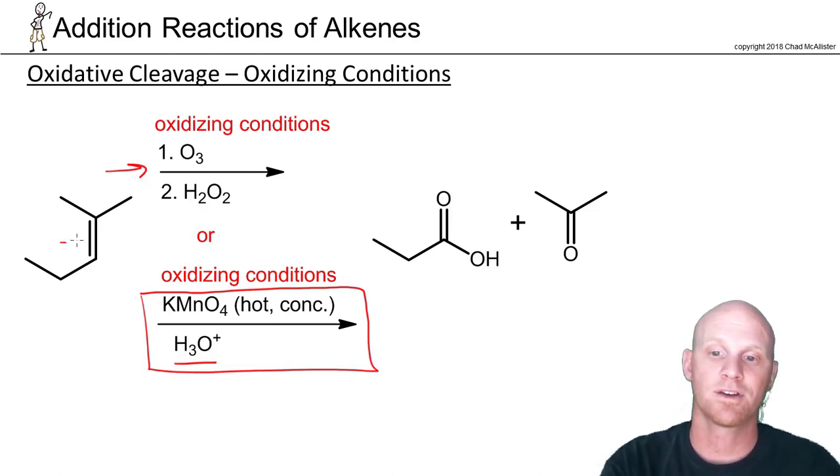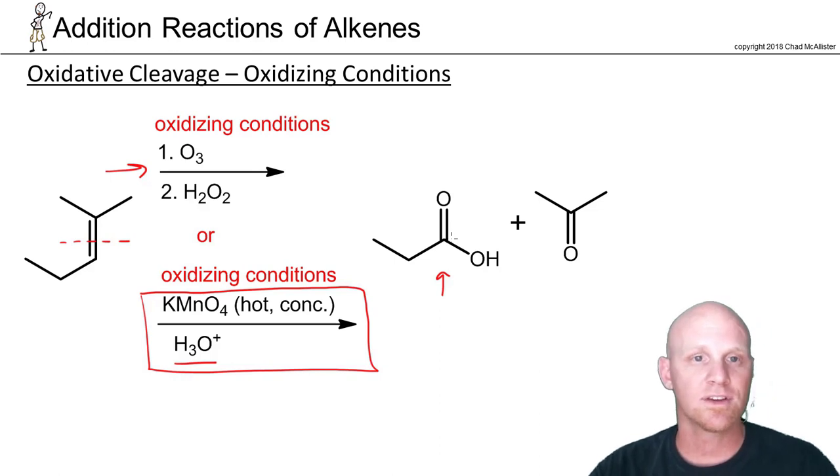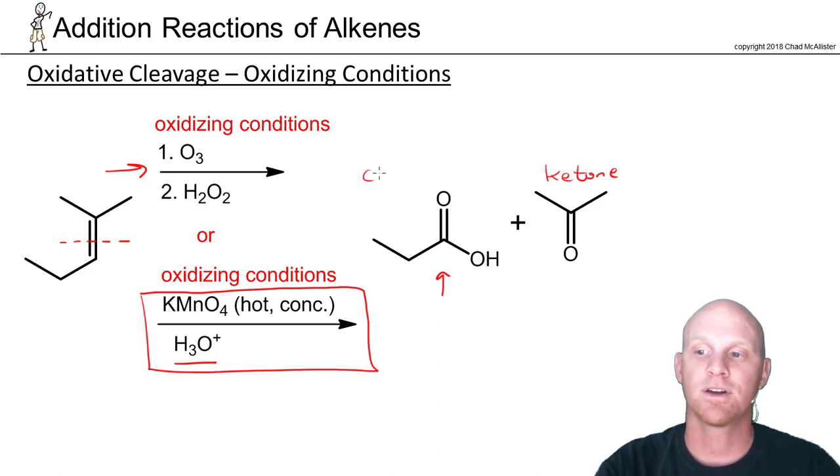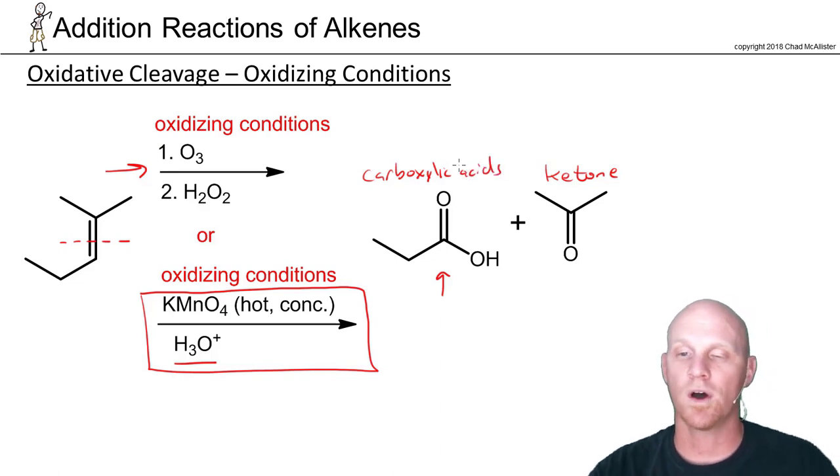And so in this case, it does it under oxidizing conditions. Potassium permanganate itself is an oxidizing agent. And so it turns out you'll initially form that aldehyde in this example, but that aldehyde will get oxidized to a carboxylic acid as well. So with oxidizing conditions, any ketones you form are going to stay ketones. But any aldehydes it looks like you might form from oxidative cleavage become carboxylic acids instead. And so in this example, we get one carboxylic acid and one ketone.